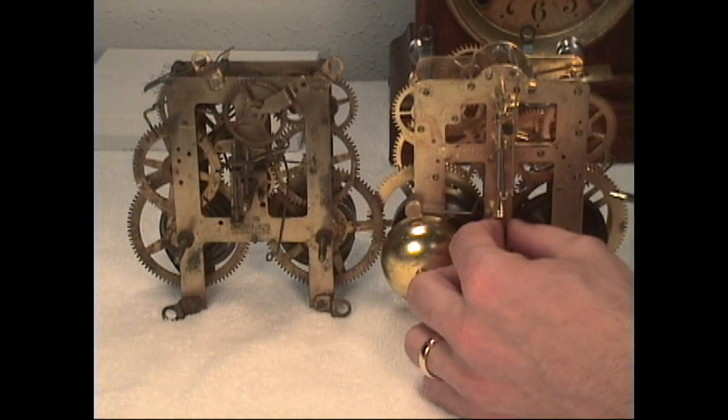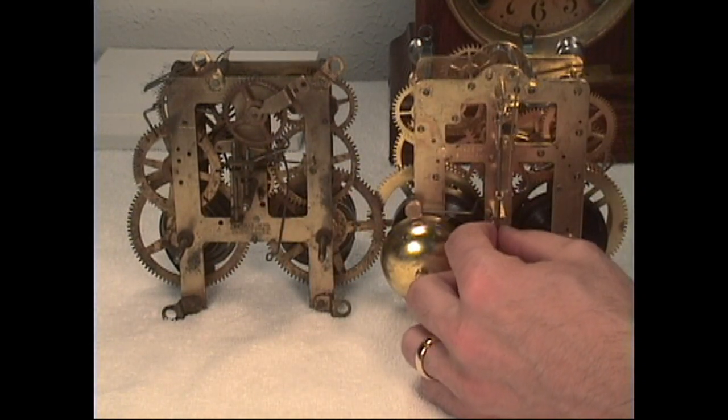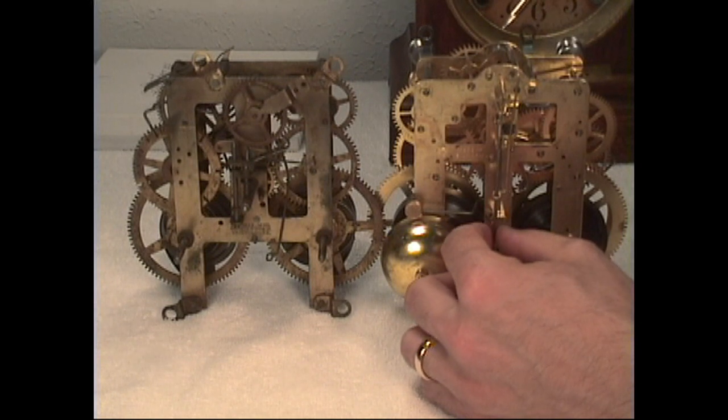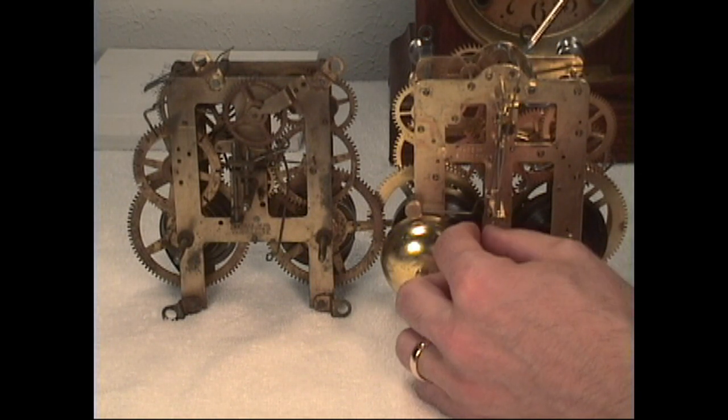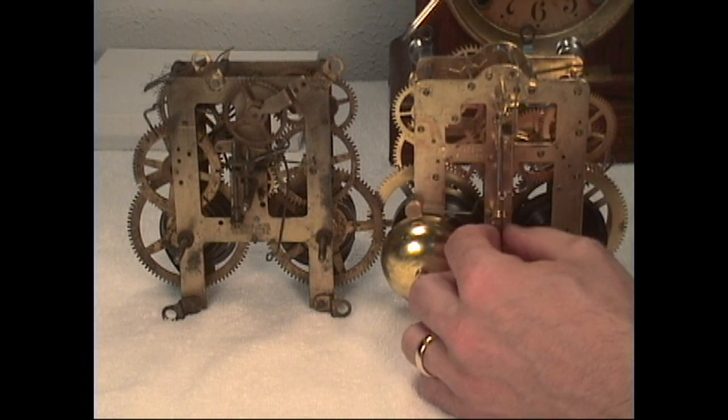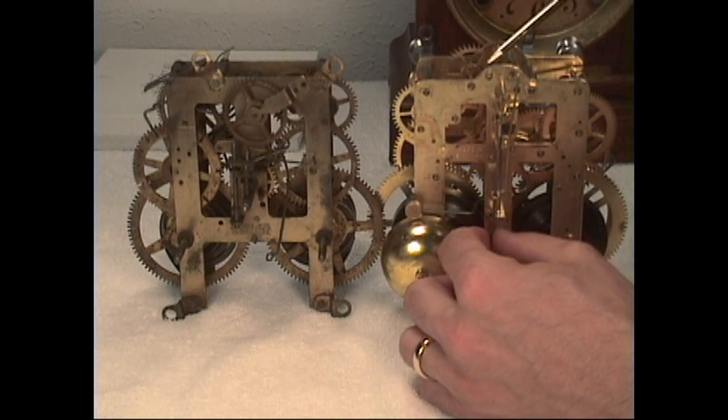Now over here on our Seth Thomas that we're working on, the escape wheel is up here at the top and here's the exit pallet up at the top and we need to be able to oil at the entry pallet. Now the entry pallet is down here within the movement so it's going to be a little bit trickier on this one compared to the Ingram which would be much simpler to oil.